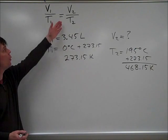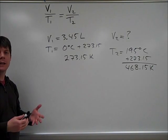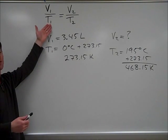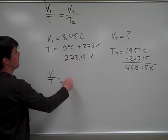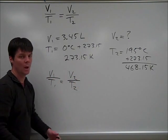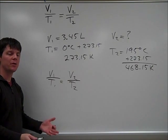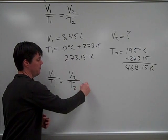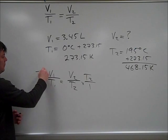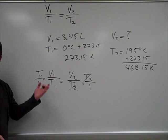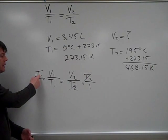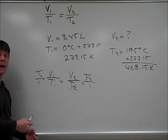Because we are trying to solve for V2, we're going to need to do some algebra to solve Charles Law in terms of V2. We can see that if I multiply both sides of the equation by T2, that T2 will cancel here, so we can solve for V2. It's T2 times V1 divided by T1.